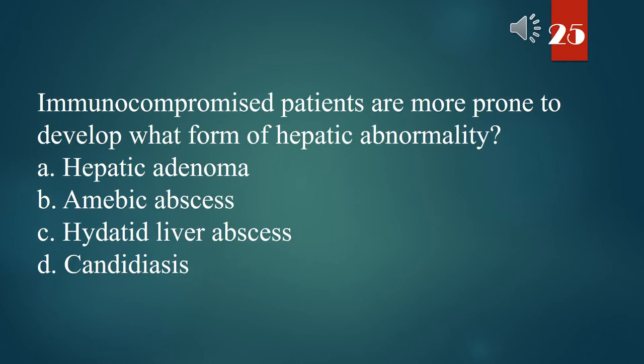Immunocompromised patients are more prone to develop what form of hepatic abnormality? A. Hepatic adenoma. B. Amoebic abscess. C. Hydatid liver abscess. D. Candidiasis. The answer is D. Candidiasis.